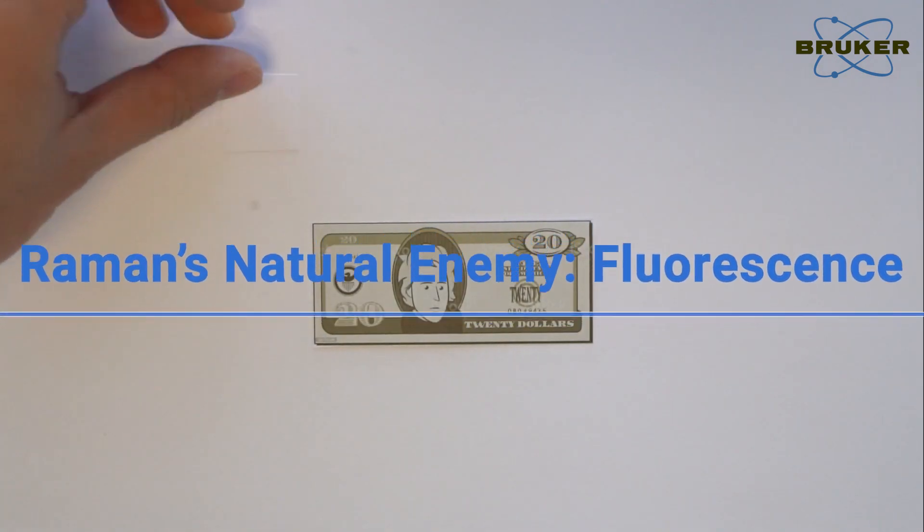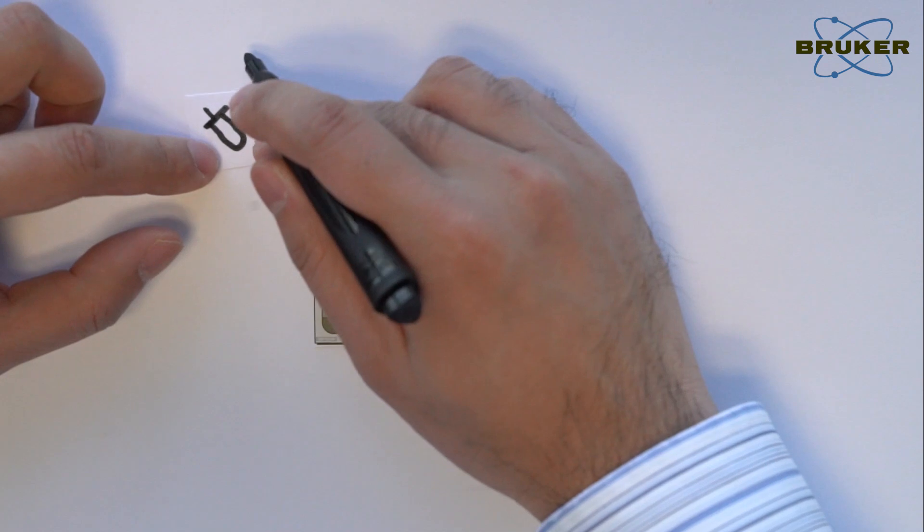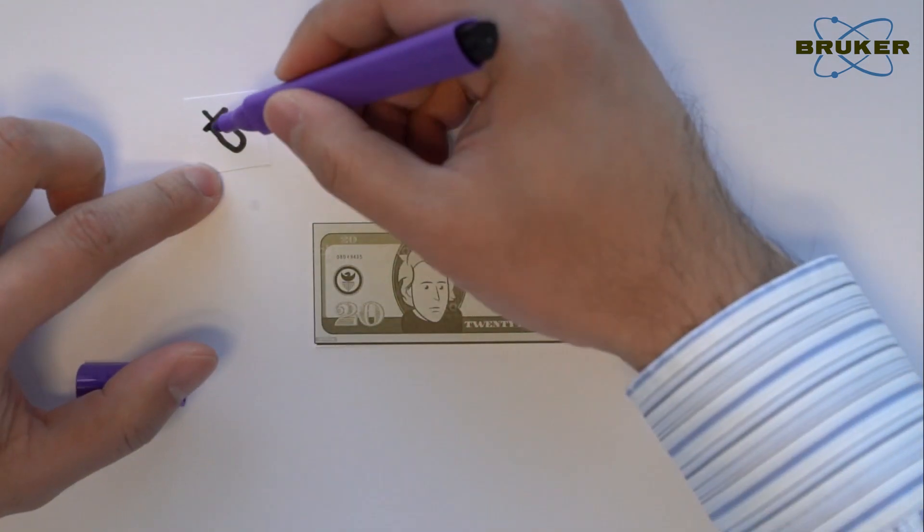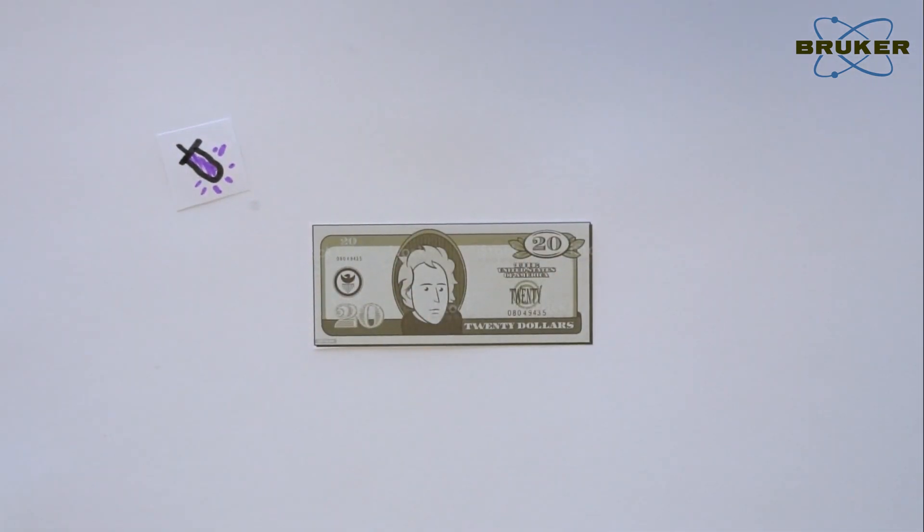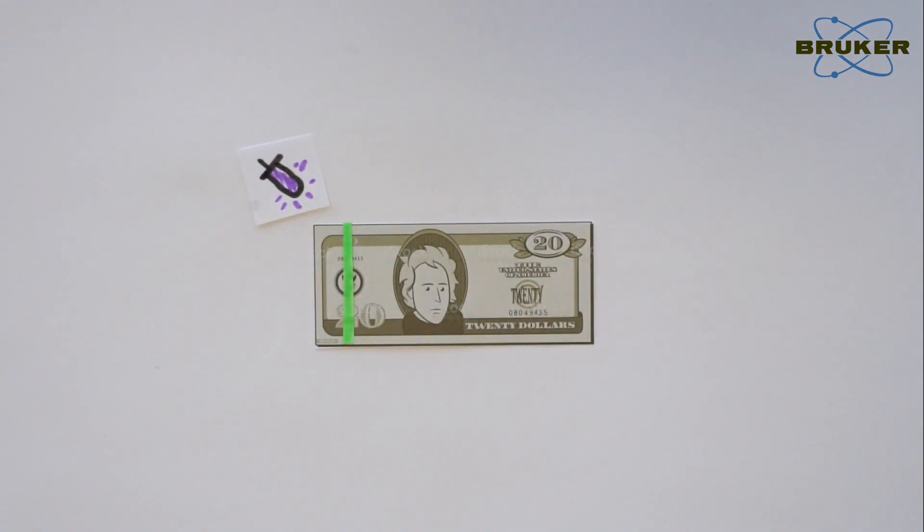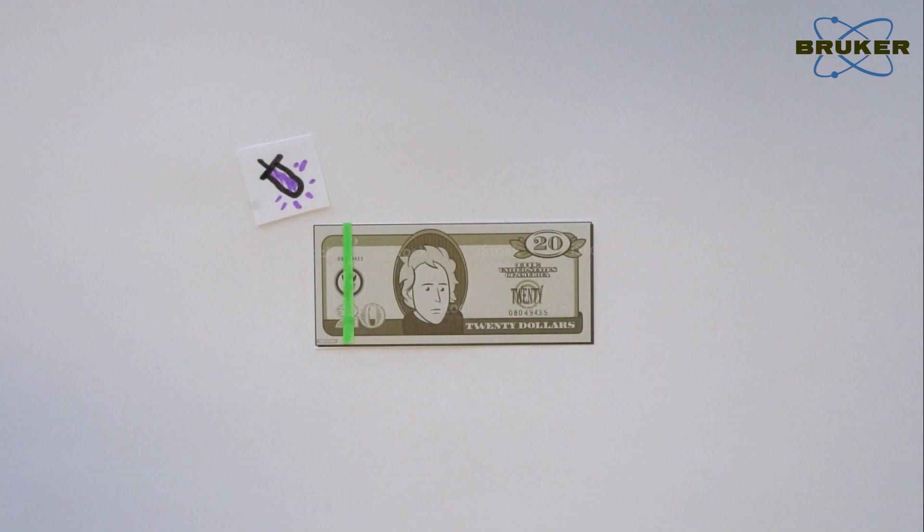But of course fluorescence is not all bad. For example, fluorescence marking is a safeguard against the counterfeiting of banknotes. If you expose a $20 bill to a violet light, a security mark will start to glow green.